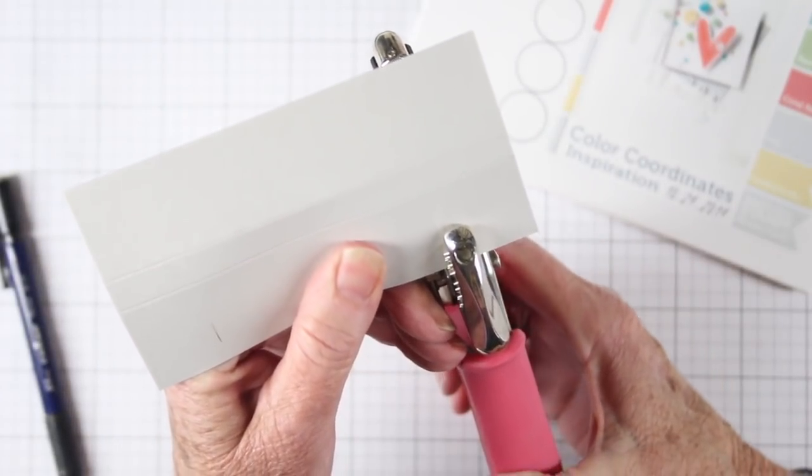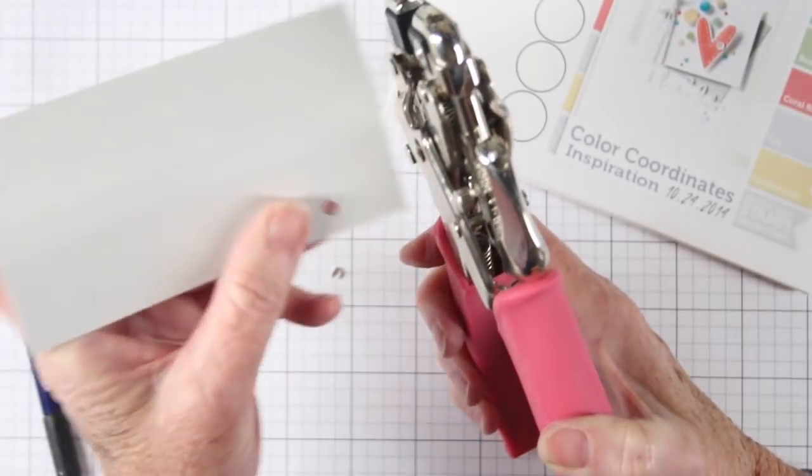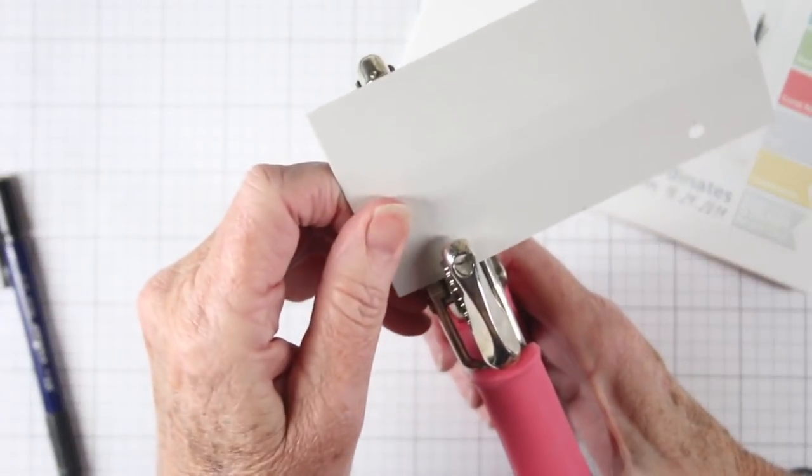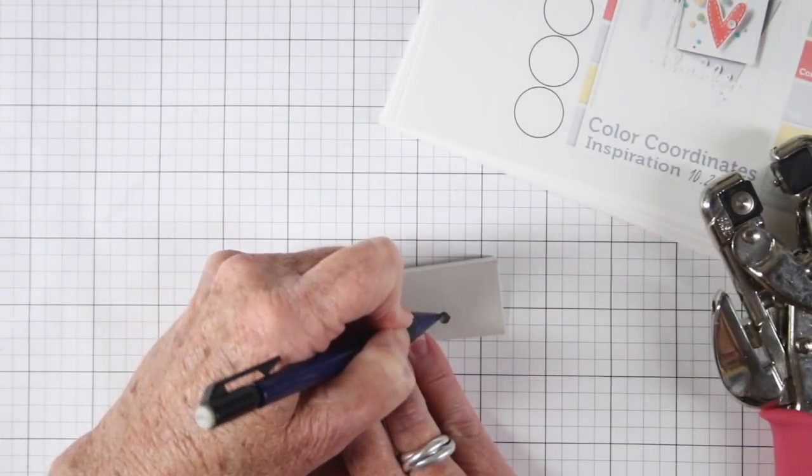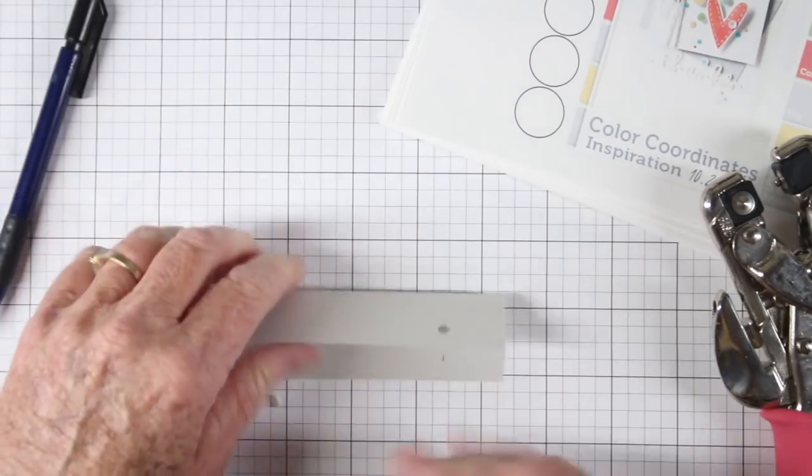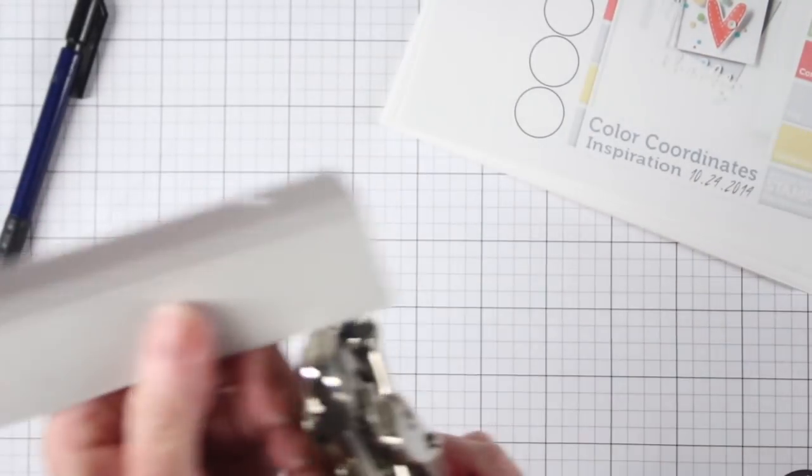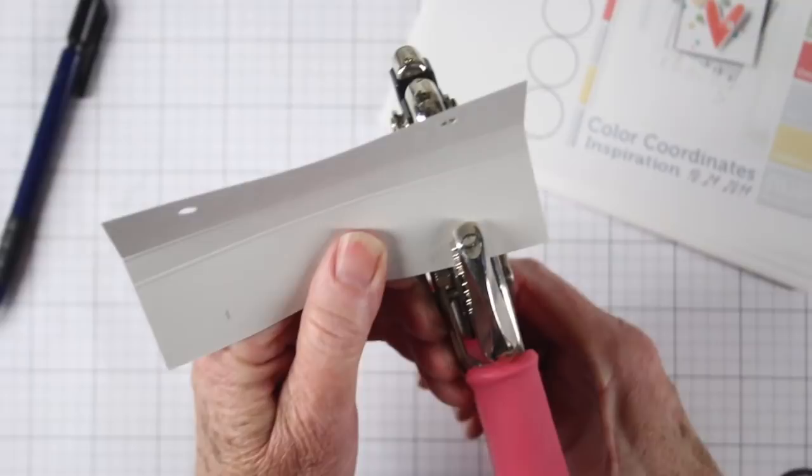I'm using the largest hole punch on the Crop-A-Dial and I'll just punch right through those pencil marks. To mark the back side of the paper I have just folded those edges close together and mark those with a pencil as well.